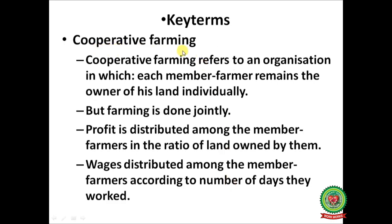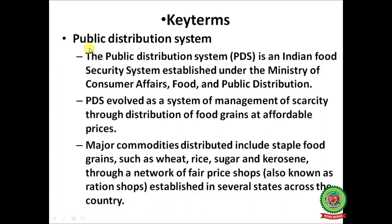Next one is cooperative farming. Cooperative farming refers to an organization in which each member farmer remains the owner of his land individually, but farming is done jointly. Profit is distributed among the member farmers in the ratio of land owned by them, and wages are distributed among the member farmers according to the number of days they worked.